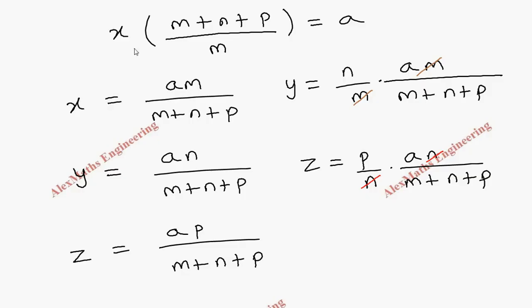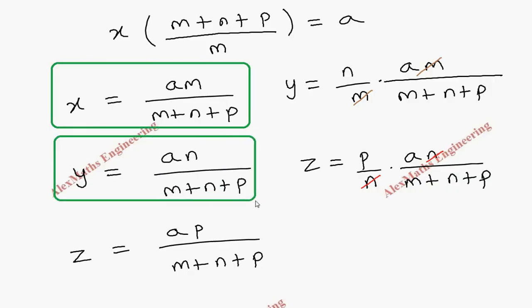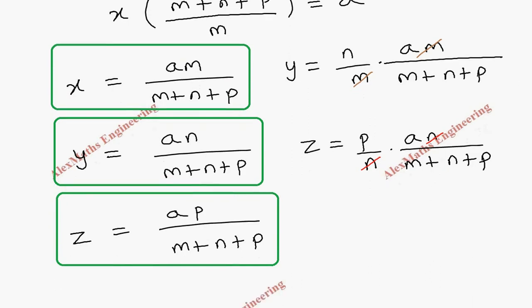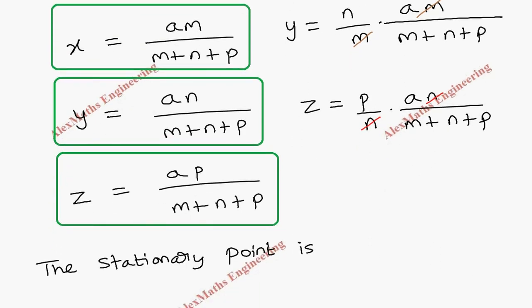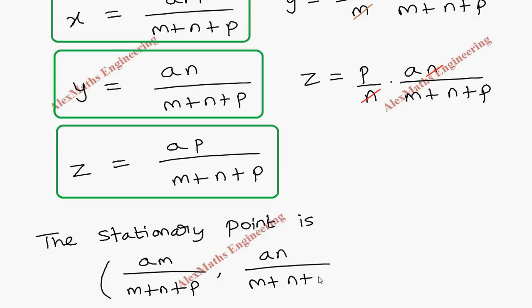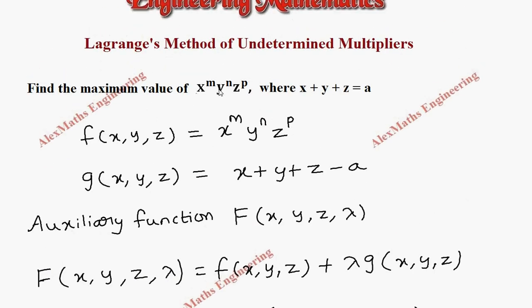We have found the values of x, y, and z. The stationary point is the coordinate (am/(m+n+p), an/(m+n+p), ap/(m+n+p)).